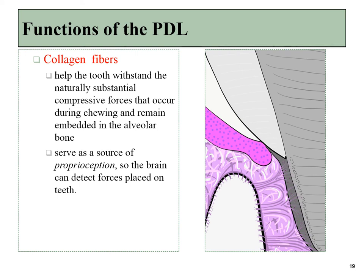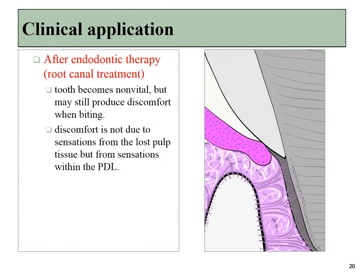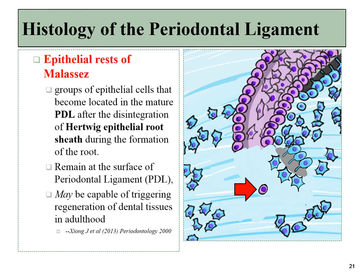After endodontic therapy, all of the nerve endings of the pulp will be removed, but that tooth may still have a little bit of sensitivity thanks to nerve endings associated with the periodontal ligament. The epithelial rests of Malassez can also be found scattered amongst the PDL — these are the remnants of Hertwig's epithelial root sheath after most of it disintegrated. Again, we're not really sure what these epithelial cells are doing here, but it's possible they might trigger wound healing later in life.